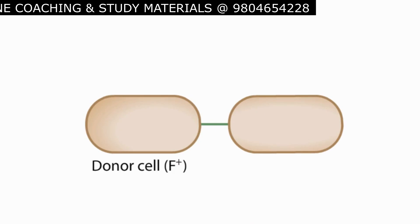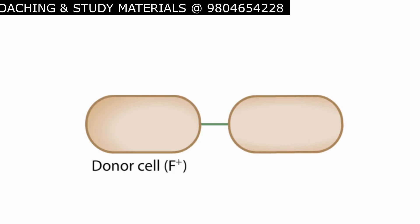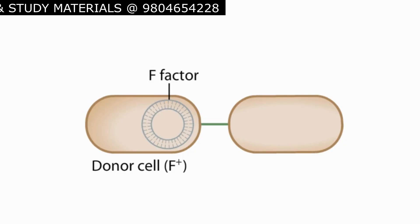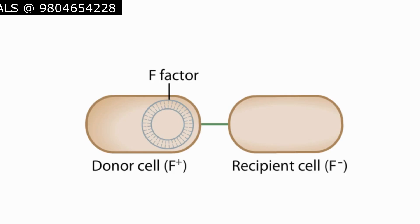The donor cell is called an F plus cell because it carries a plasmid called F factor, for fertility factor. The F factor contains all the genes needed for sex pilus formation and for DNA export. The recipient cell lacks the F plasmid, thus called F minus. Both cells have a normal bacterial chromosome.